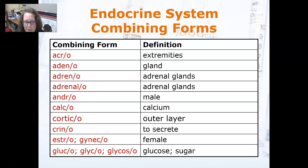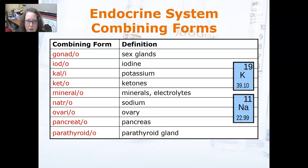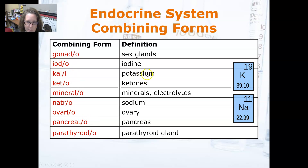Gluco, glyco, and glycoso mean glucose or sugar — gluco is usually glucose, glyco is sugar, and glycoso is glycoso. Gonido is sex glands. Iodo is iodine. Kali, which is one of the few with an I, means potassium — as in hyperkalemia or hypokalemia, meaning too much or too little potassium.